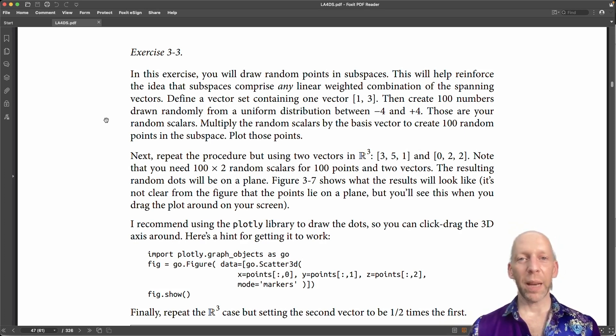In the previous couple of exercises we were taking a very small number of linear weighted combinations with just one scalar per vector. The idea of a subspace is you repeat that process conceptually, but instead of just taking one scalar, you take an infinity of scalars from minus infinity to plus infinity.